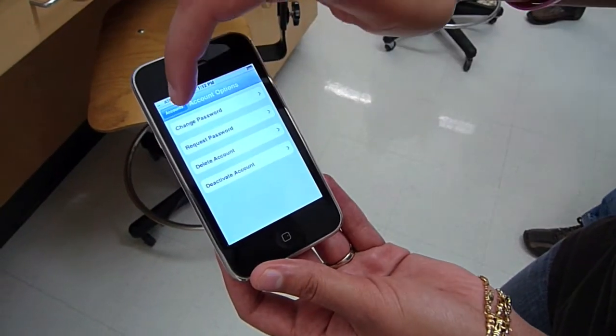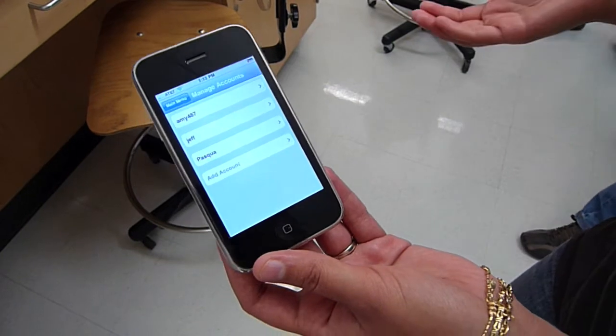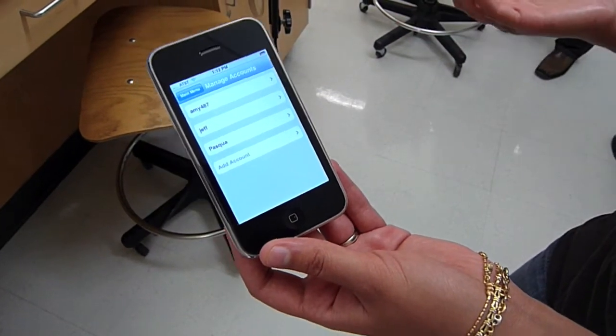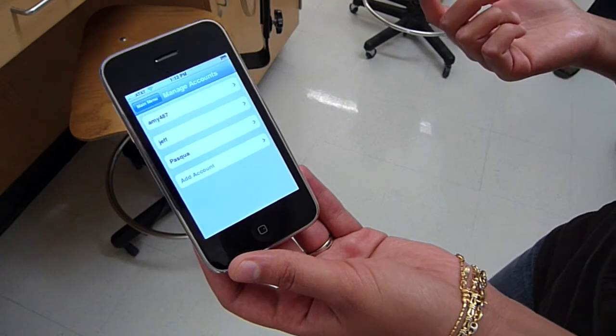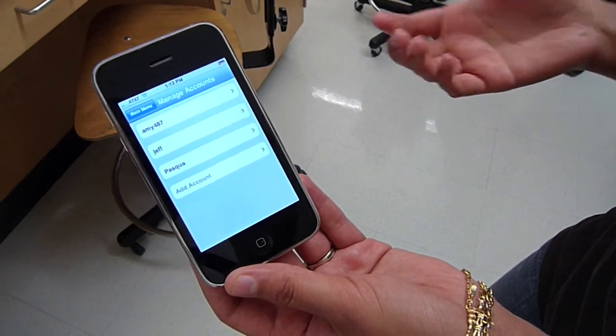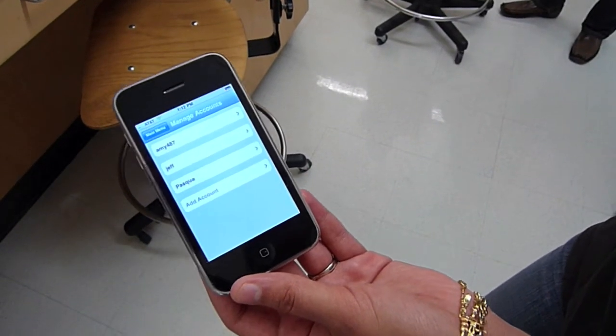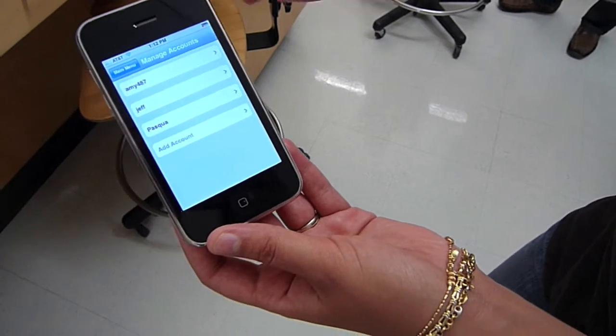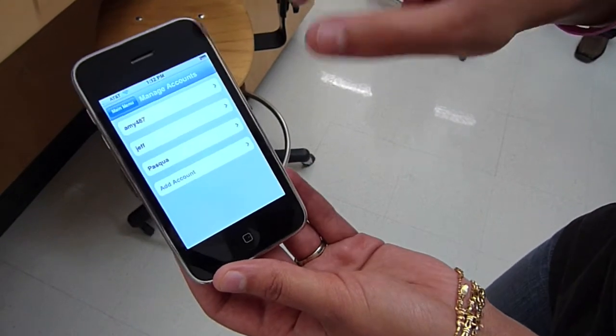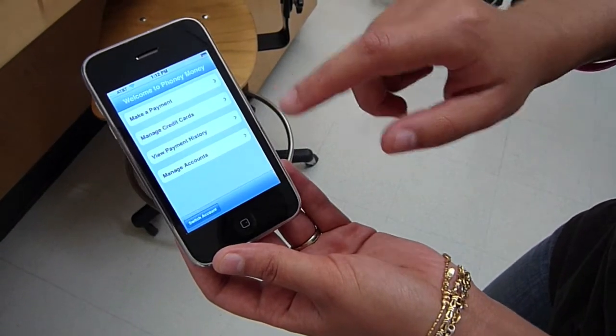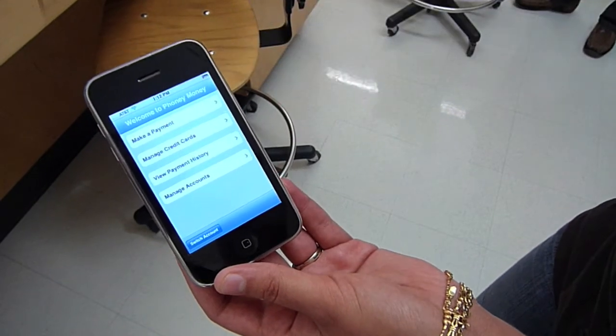Delete your account, deactivate it. You can only have your account activated on one phone at a time, so if you want to put it on a different phone now without deleting your actual account, you can deactivate it and reactivate it on that phone. And then we can now show you how to make a transaction.